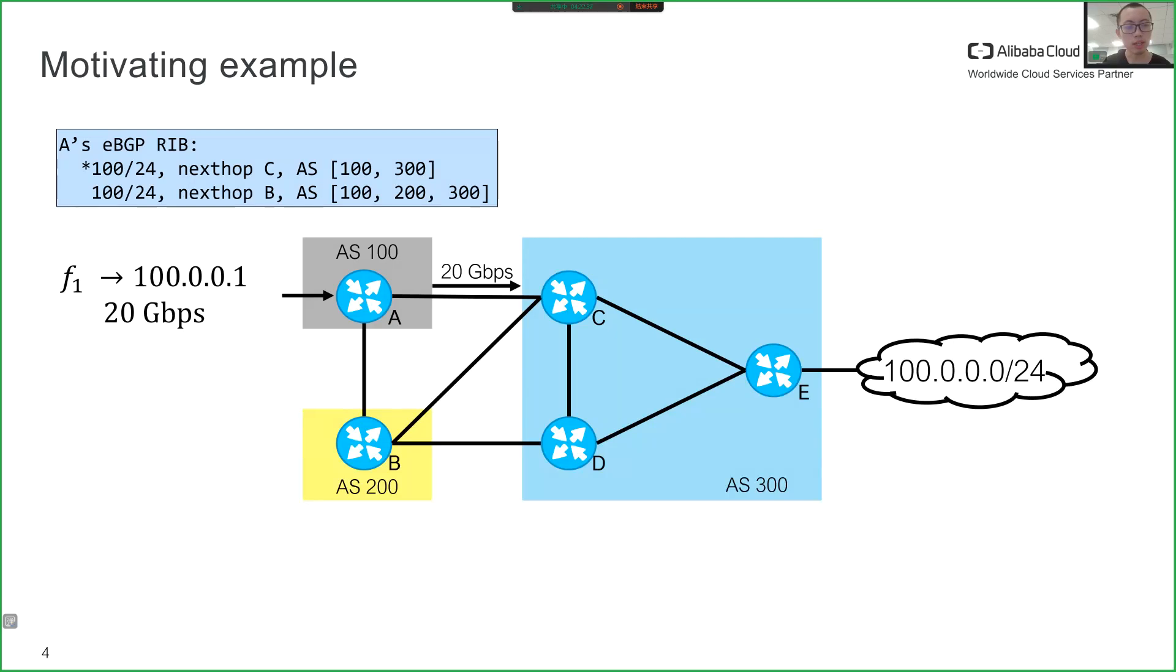At router C, the next hop is determined by a route redistribution from the BGP protocol to the IGP protocol. We omit the details and give the result: all traffic is routed through link C to E.